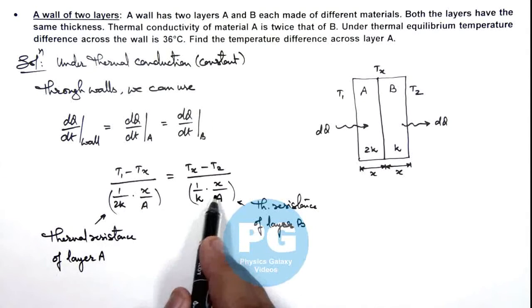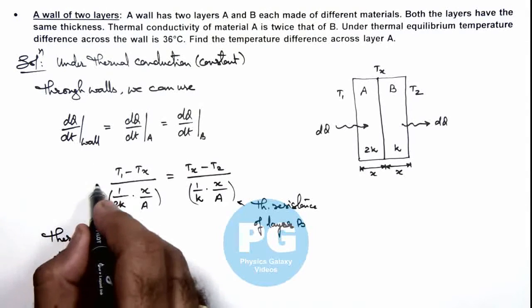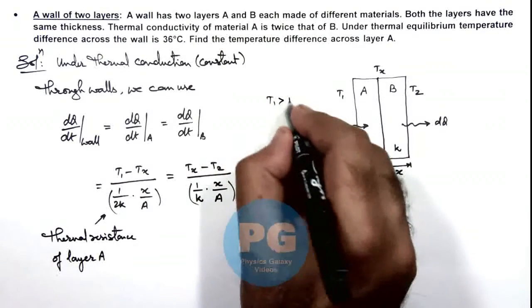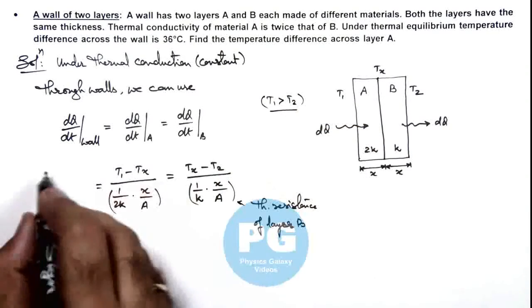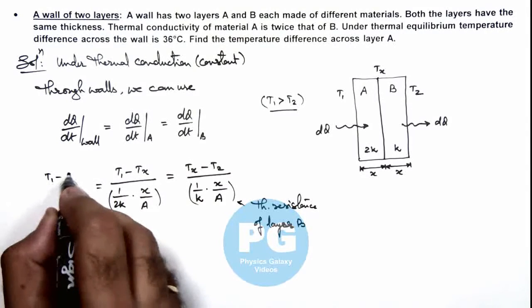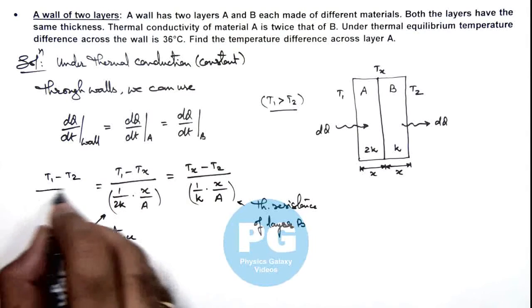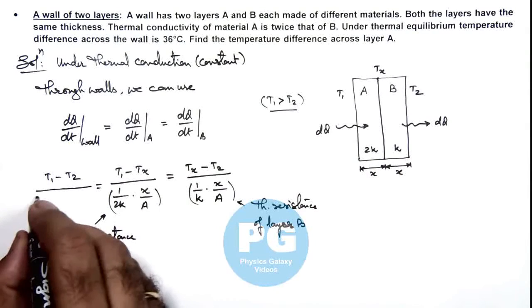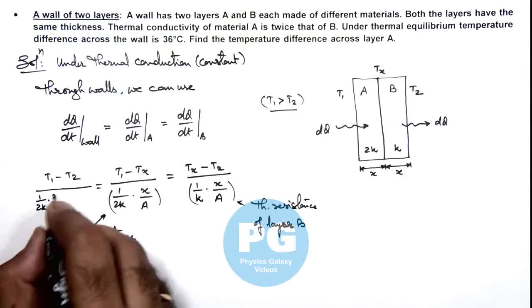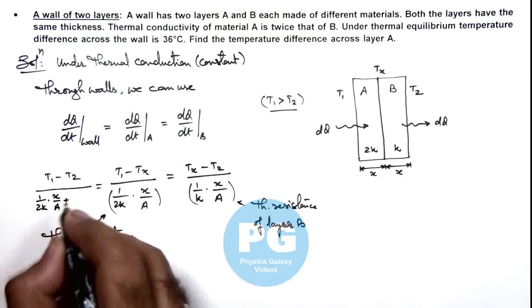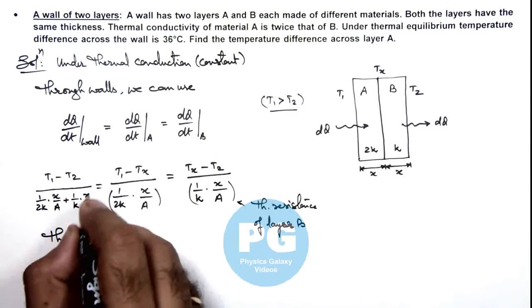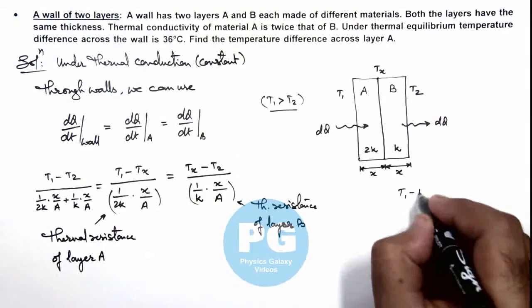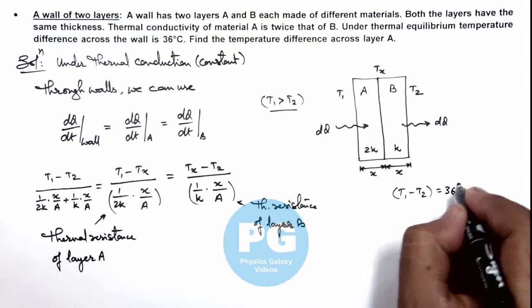Similar to this, we can also write a relation for the whole wall. If T1 is greater than T2, which we have already taken, this can be written as T1 minus T2 divided by the total thermal resistance of the two layers, which is 1 over 2k times x over A plus 1 over k times x over A. We are given that T1 minus T2 equals 36 degrees Celsius.